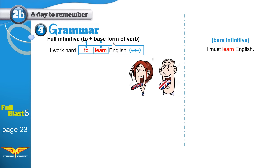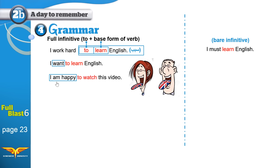We also add 'to' to the base form of the verb when we use verbs like: want — 'I want to learn English'; would like — 'I would like to learn English'; would love — 'I would love to learn English'; decided — 'I decided to learn English'; plan — 'I plan to learn English in the summer'; promise — 'I promise to learn English.' With all these verbs, we add 'to' to the base form.